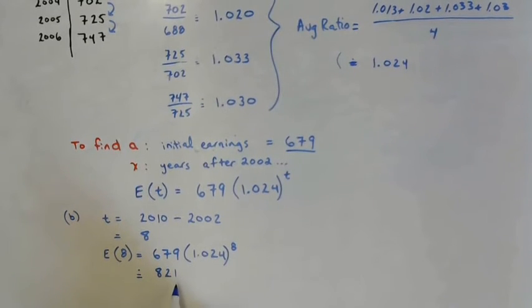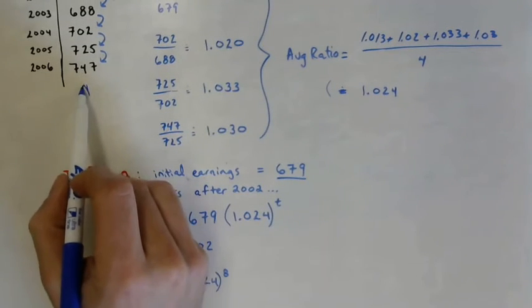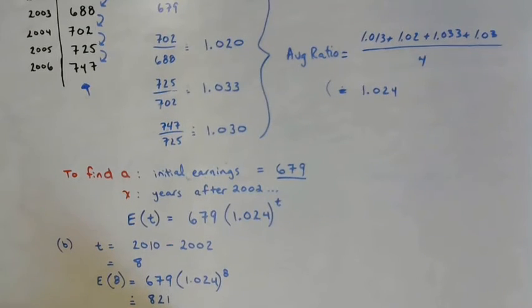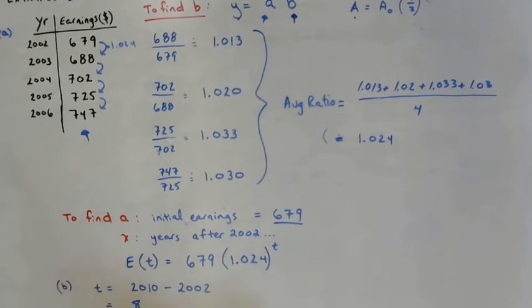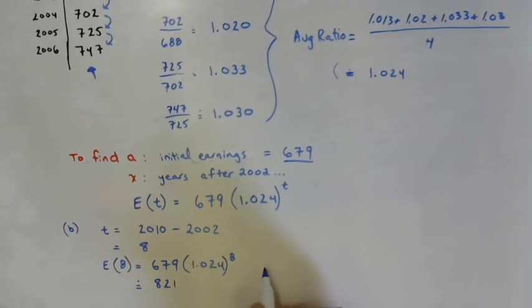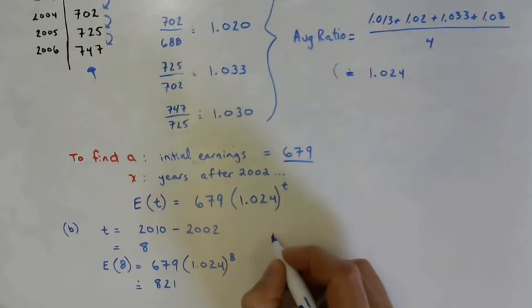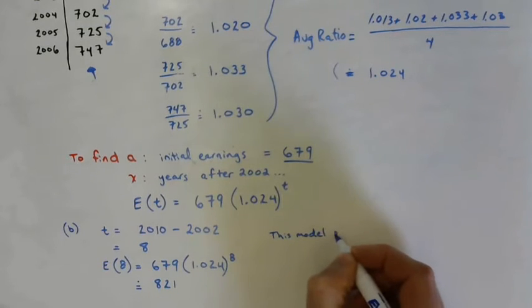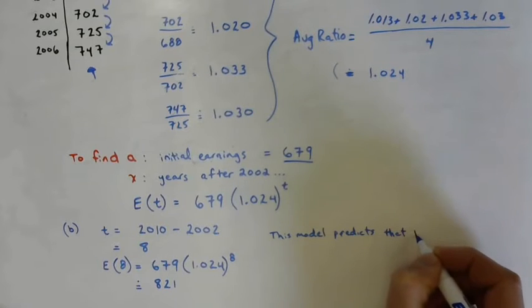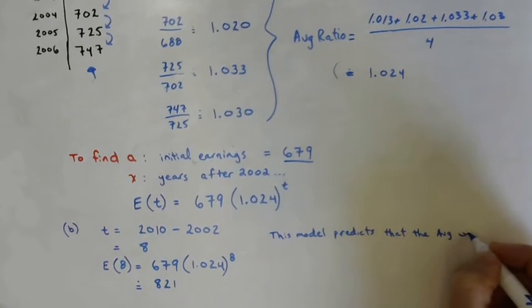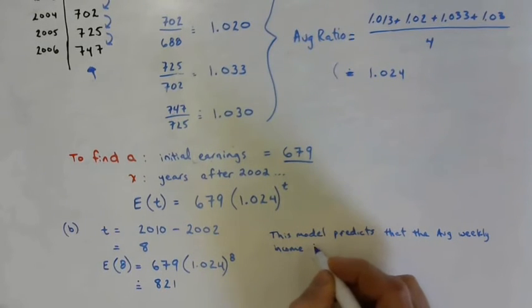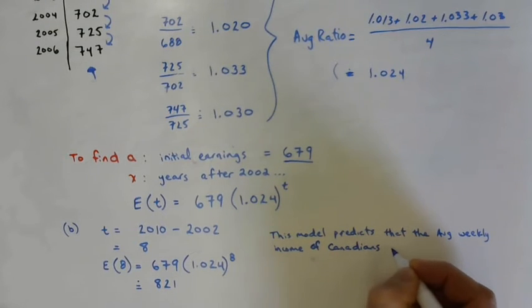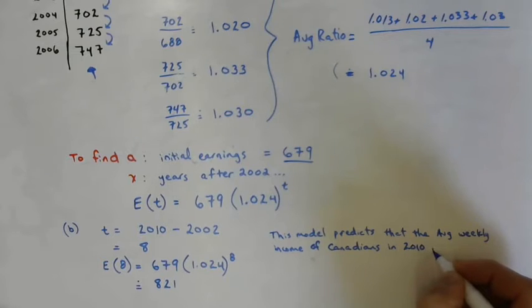We're not going to use, why aren't we using decimals here? You could. It's just none of the other data is given using cents. It's all given using dollars. So in 2010, based on this information, you can assume that the average weekly earning for a Canadian in 2010 was approximately $820. Let's write a little sentence, a little statement. This model predicts that the average weekly income of Canadians in 2010 is about $820.